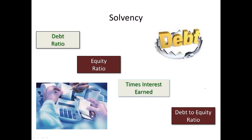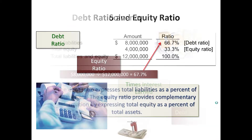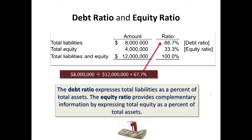Now let's talk about solvency ratios — these are more for the ability to pay debt in the long term. You've got the debt ratio, the equity ratio, the TIE ratio, the debt to equity. These all pretty much measure the same thing but in different ways. The debt ratio is computed as your total liabilities as a percentage of your total assets.